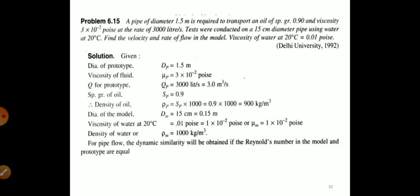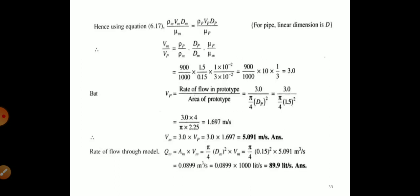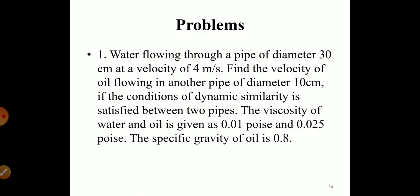Here is a solved example related to Reynolds model law: A pipe of diameter 1.5 m is required to transport oil of specific gravity 0.90 and viscosity 3×10⁻² at a rate of 3000 liters. Tests were conducted on a 15 cm diameter pipe using water at 20°C. Find the velocity and rate of flow in the model. Viscosity of water at 20°C = 0.01 poise. First, convert 3000 liters to cubic meters, then use the given data for density and specific gravity of oil. Using the equation for linear dimension, calculate the rate of flow and area of the prototype. This problem is to be solved at home.